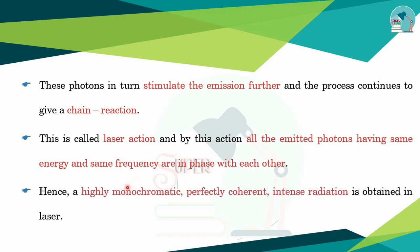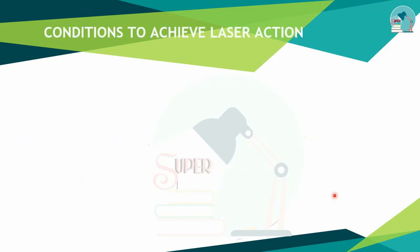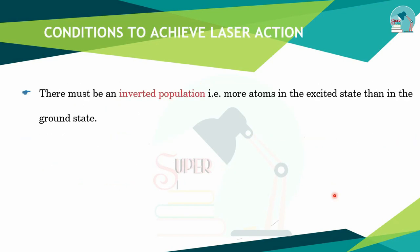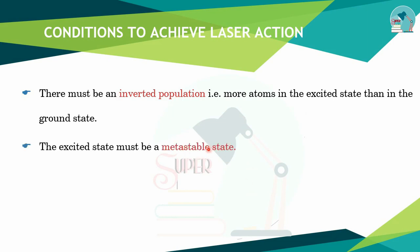The photons have the same energy, frequency, and will be in the same phase with each other. So the laser light is highly monochromatic, perfectly coherent, and intense radiation. If the laser action is achieved, the conditions are inverted population — more atoms in the upper state than the lower state.